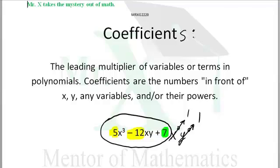What are the coefficients in this particular example? 5, negative 12, and 7.